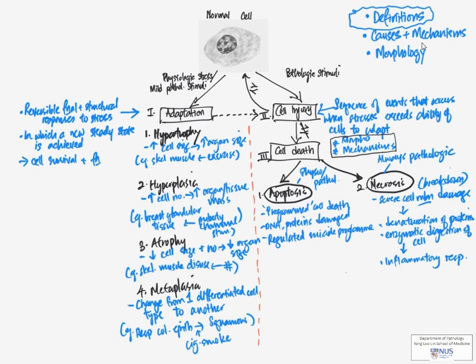So in the next mind maps, we are going to move on to talk about the causes and mechanisms of cell injury and then also about the morphology of cell injury and the different types of cell death.